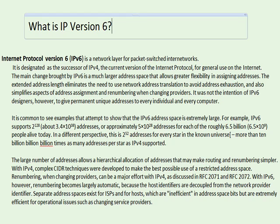IPv6 gives us a lot more addresses, and because we have so many more, it's a different world. With IPv4, everybody runs NAT on their home or business network — all private addresses inside, with a NAT router doing port address translation or network address translation to a public address. With IPv6, that's no longer really necessary. There are so many addresses that there's really no reason to run NAT for IPv6, other than the security it provides.